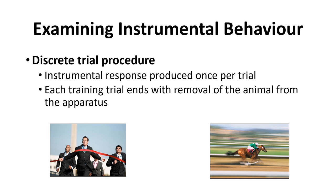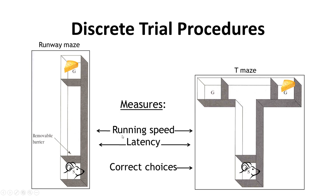To start a new trial, you pick the animal up and put them back at the beginning. A race is also equivalent to a discrete trial procedure — everyone starts at the starting line, runs to the finish, and whoever crosses first wins that trial. Mazes are commonly used here. A runway maze is simply going from the start of a tunnel to the end. A T-maze has you run to the end and choose left or right. There are also radial arm mazes and plus mazes.